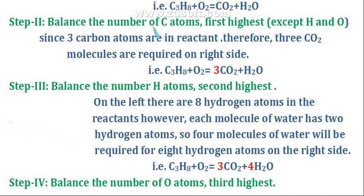Accepting hydrogen and oxygen, we will balance the remaining atoms. Since there are three carbon atoms in C3H8, therefore three CO2 molecules are required on the right-hand side. We put the coefficient 3 before CO2 so that the number of carbon atoms will be the same on both sides.